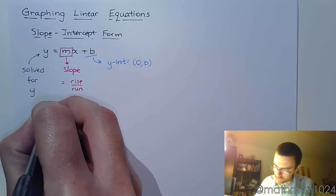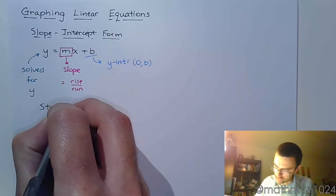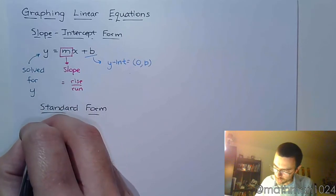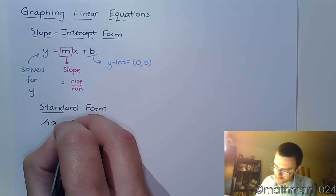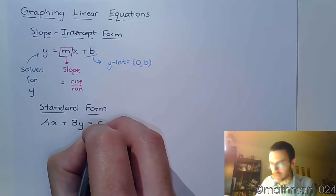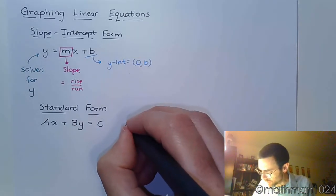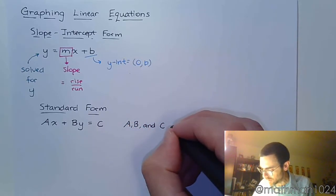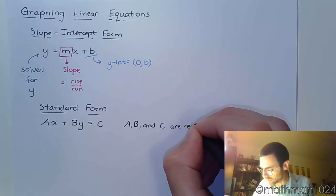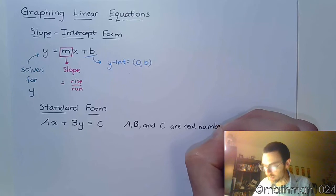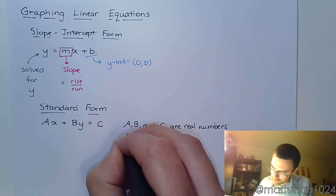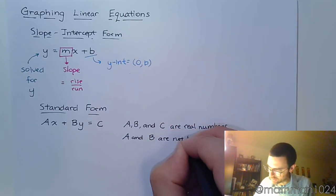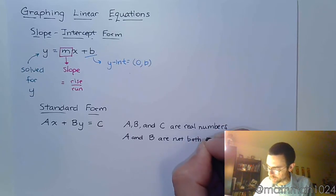And then we have the standard form. The standard form is Ax plus By equals C. And what we need to know about this is that A, B, and C are real numbers.